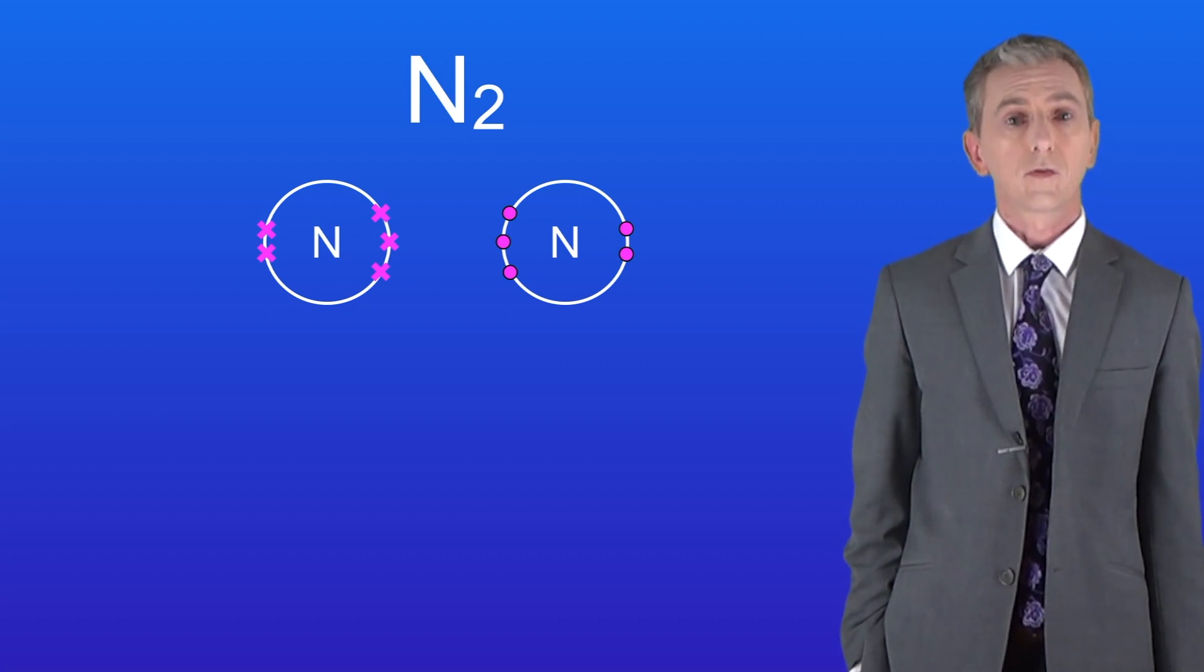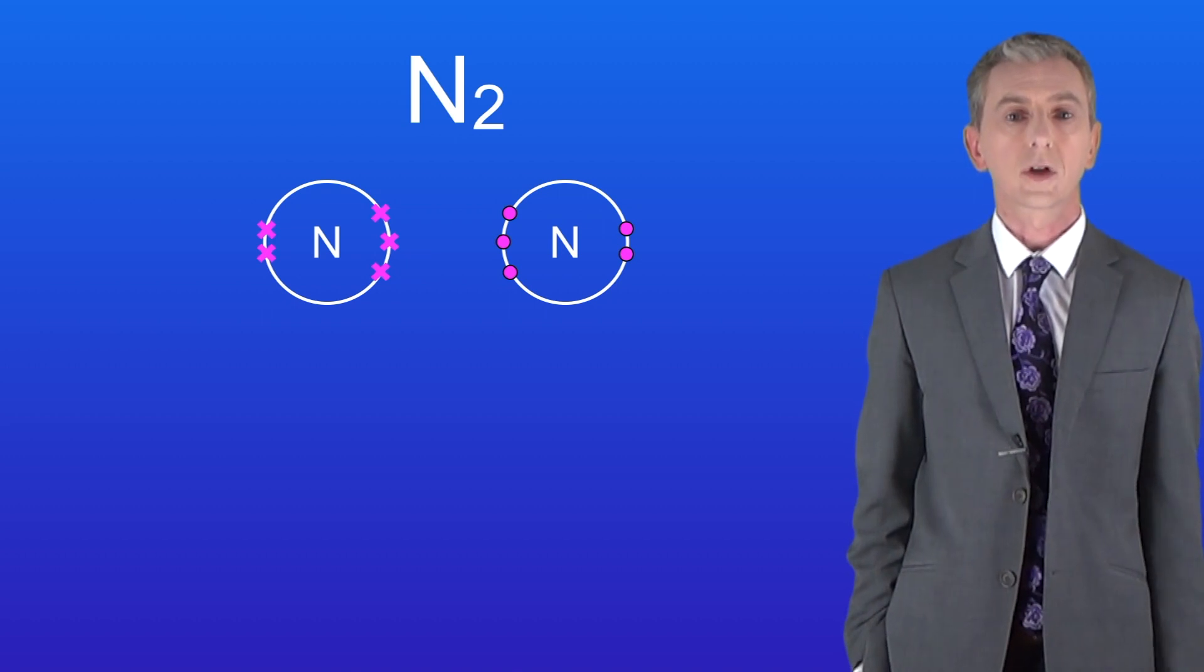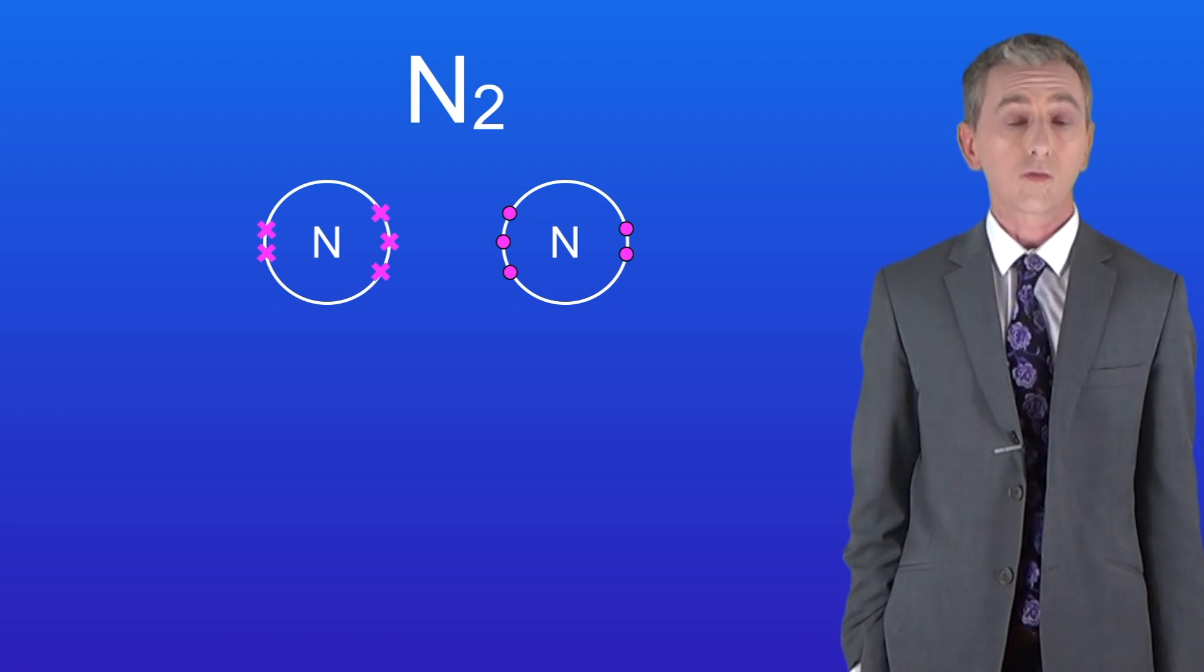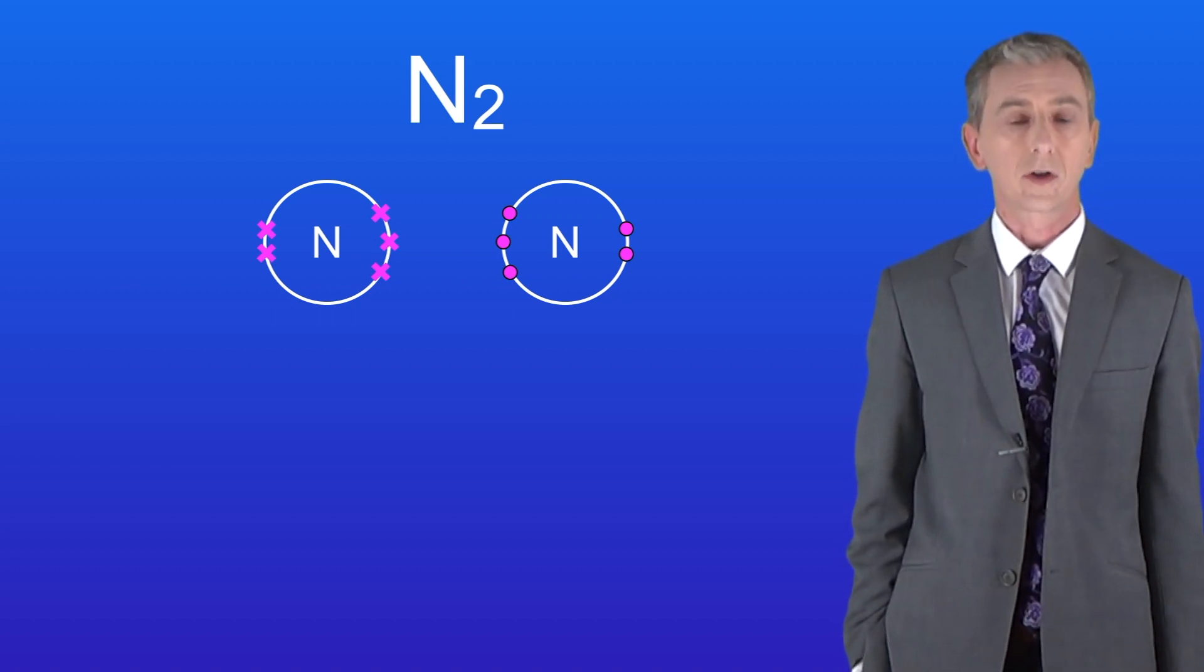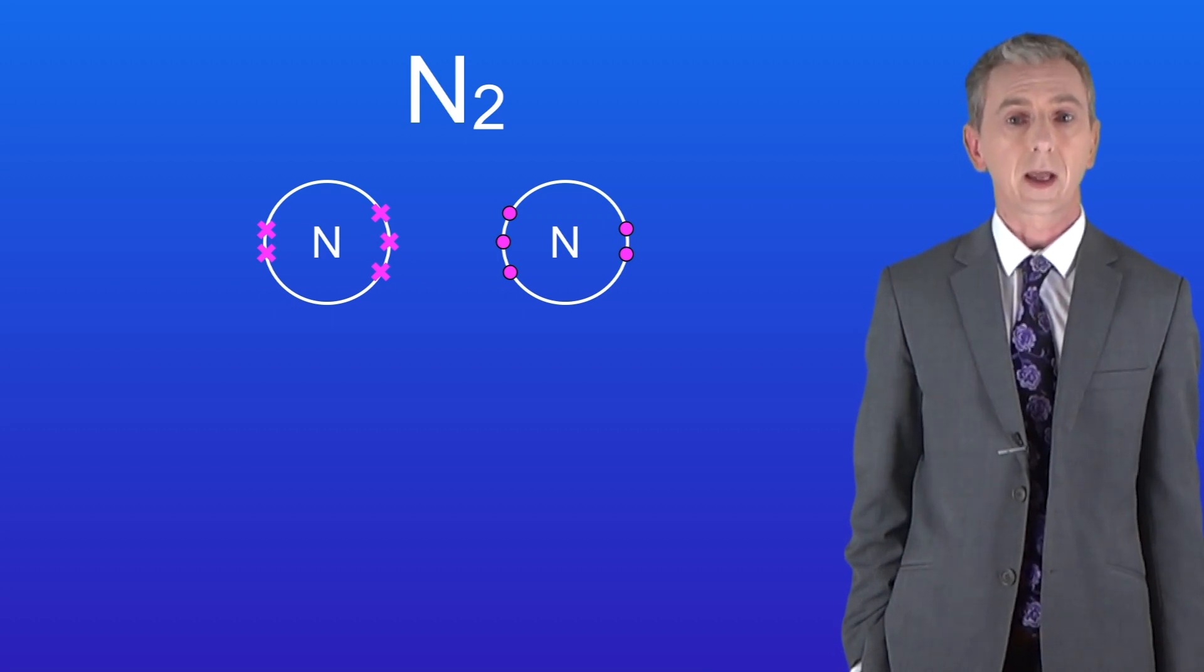I'd like you to pause the video for one final time and try to draw the covalent bonding in a nitrogen molecule. So as you can see each nitrogen atom requires three more electrons to achieve a full outer energy level and they can do this by overlapping their outer energy levels like this.